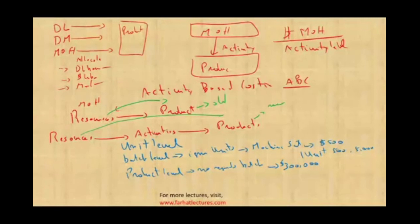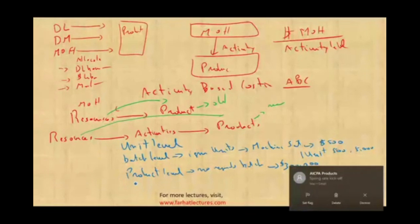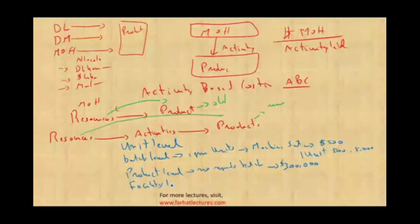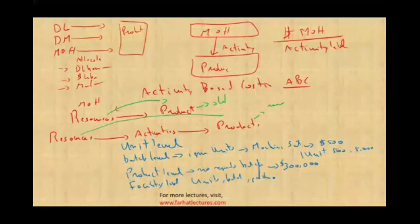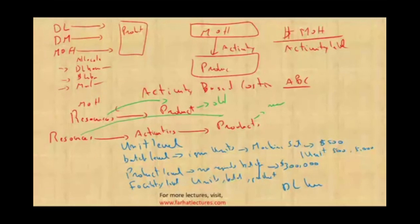Certain costs are called facility-level costs. It doesn't matter how many units, batches, or products — we consume those on a facility-wide level. Notice this new system ignores the assumption that direct labor hours alone drive everything. Using only direct labor hours becomes misleading to product costing.